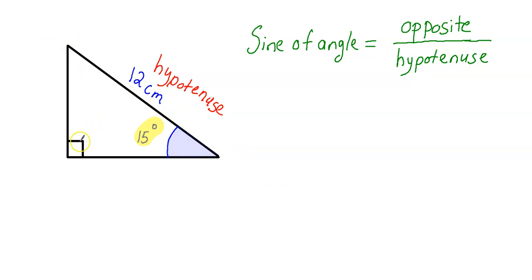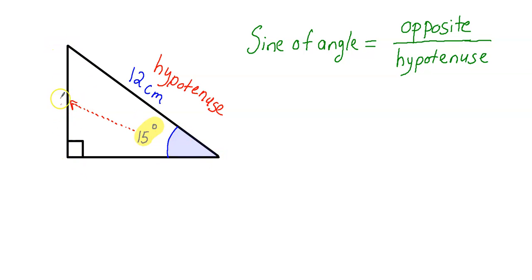Another way to find the hypotenuse is it's the side always across from the right angle — that's another way to find it. Now the next thing I need to label is the opposite side, and the opposite side depends on which angle you're looking at. Since I'm referencing this angle — not the 90 degree angle, but the 15 degree angle — the side opposite of this angle is the side farthest away from 15 degrees. It's all the way across from this angle here, this side length right here. So this is my opposite side. I'm going to put OPP for opposite. Remember, the opposite side is dependent on which angle you are referencing.